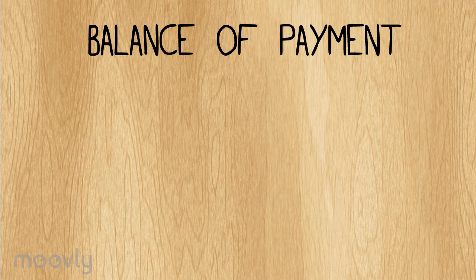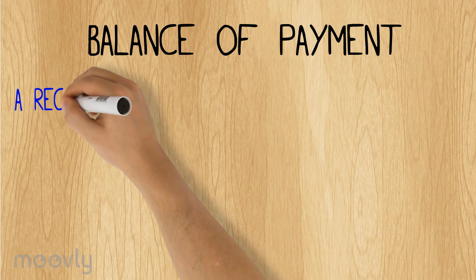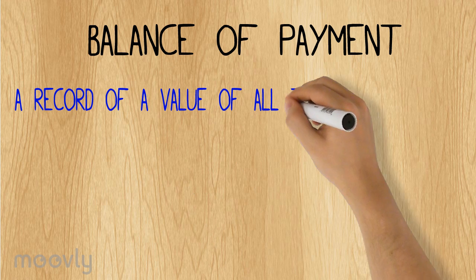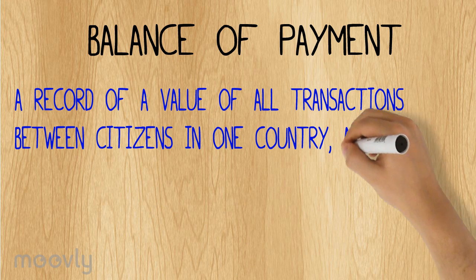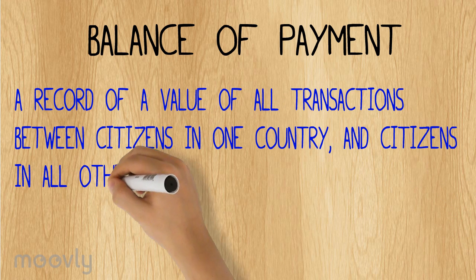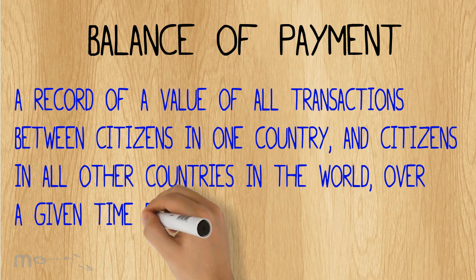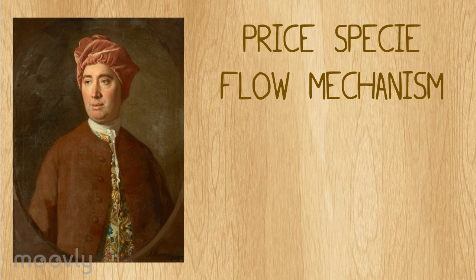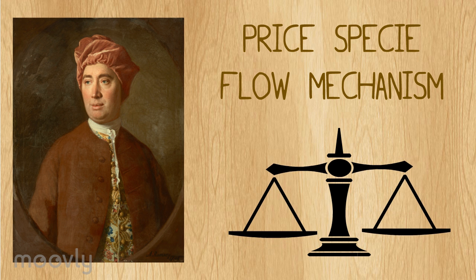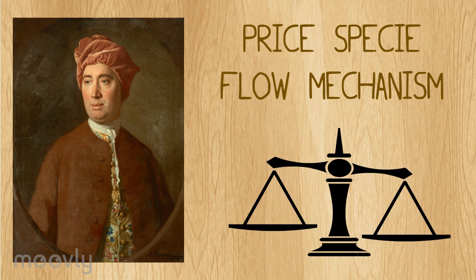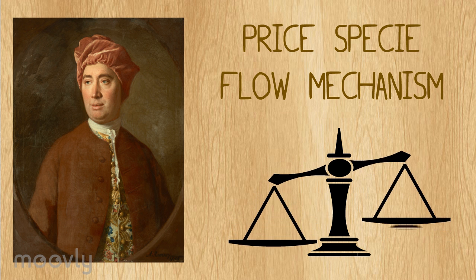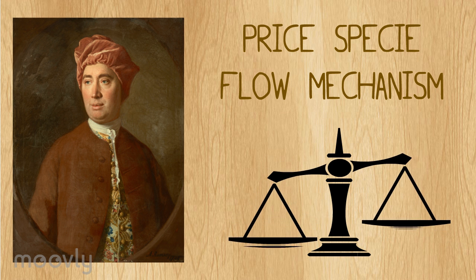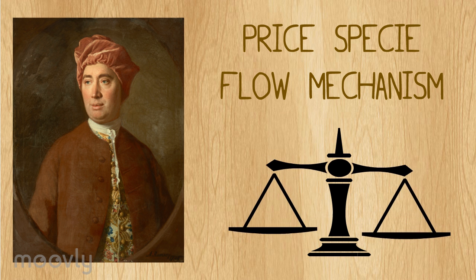So, what is a balance of payments? Well, it is a record of the value of all transactions between citizens in one country and citizens in all other countries in the world over a given time period. According to the price-specie flow mechanism implied by David Hume, exchange rates adjust over time, and as a consequence, also the balance of payments. Hence, this should lead to an overall balance of payments of zero.